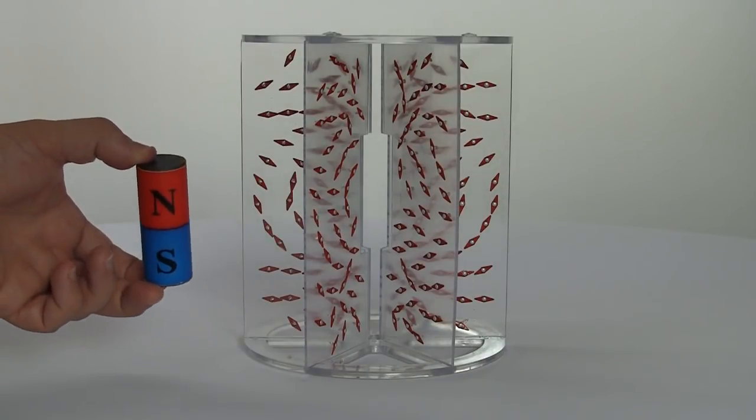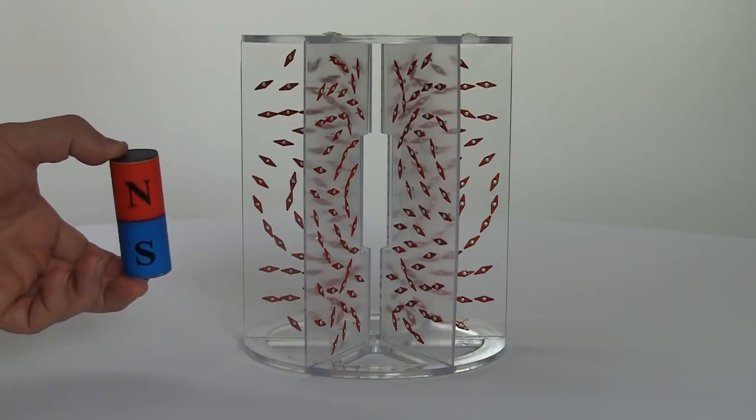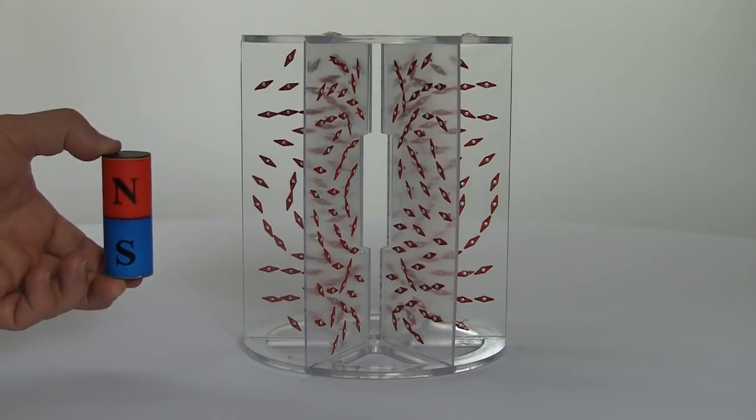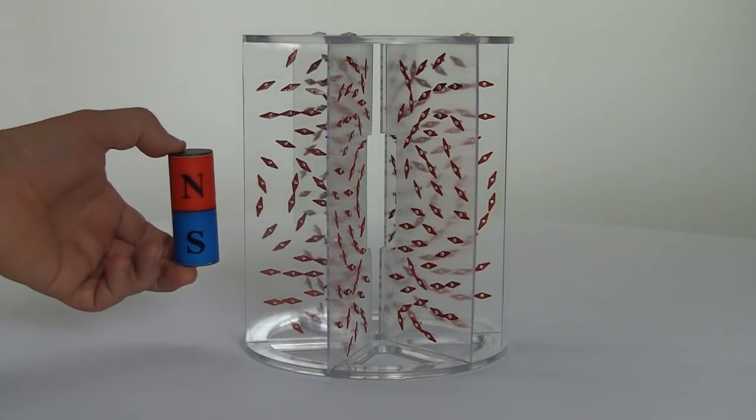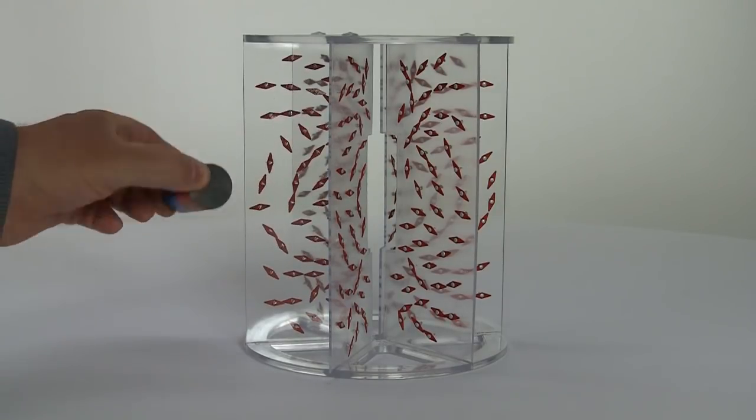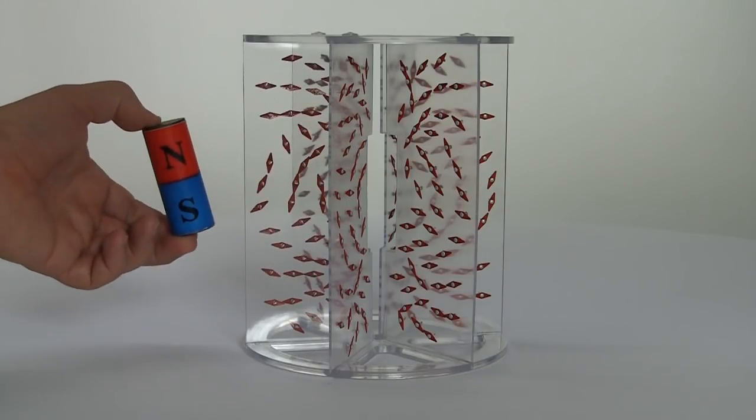Now if we look at a bar magnet, this is a cylindrical bar magnet. You don't see too much—it's got a north and a south pole—but you don't see the magnetic field at all. But if you bring it up near the magnetic field demonstrator, you'll see that the little compass needles align themselves with the magnetic field lines.